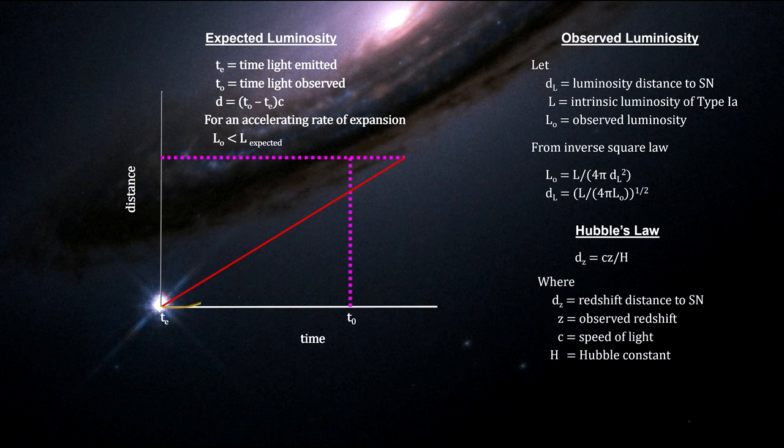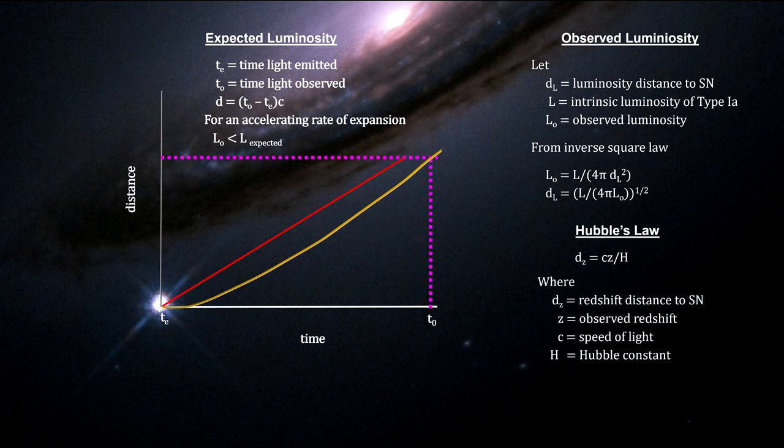By the same token, if the expansion is speeding up, the expansion rate in the past would have been smaller than what we see now, which means it would have taken a longer time to expand from its size at light emission time to its present distance compared to a non-accelerating universe.